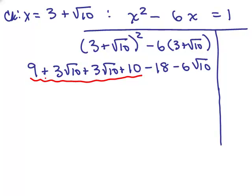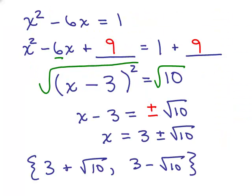If I add like terms here, I notice I get 9 plus 10—that's 19 minus 18, so that gives me 1—and then I have 3 square root of 10 plus 3 square root of 10, that's 6 square root of 10, minus the 6 square root of 10. So it simplifies to 1. That's what I have on the other side, and it checks. I'm sure most people aren't going to check their answer, but that's the only way you know for sure you got it right. So our solutions right here are correct.